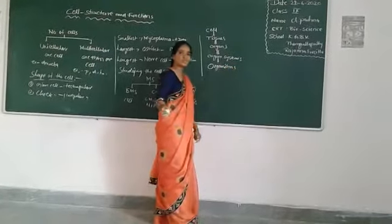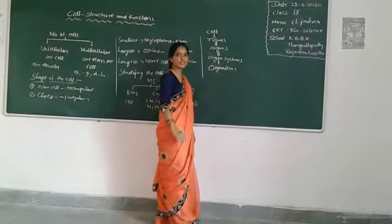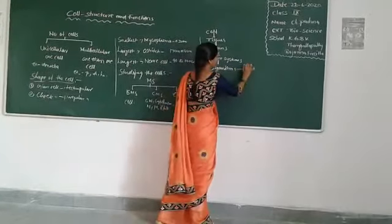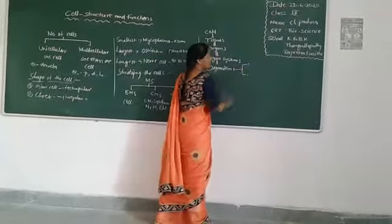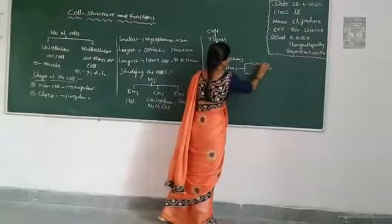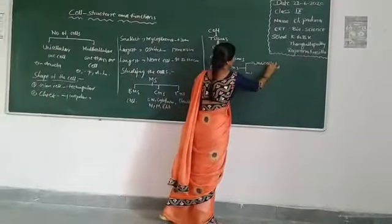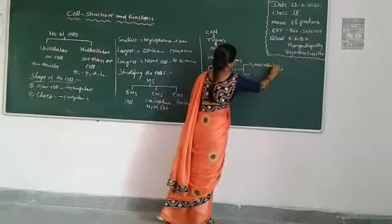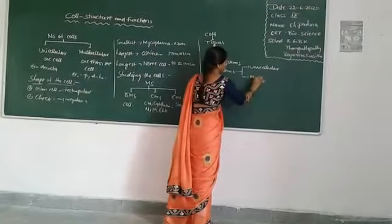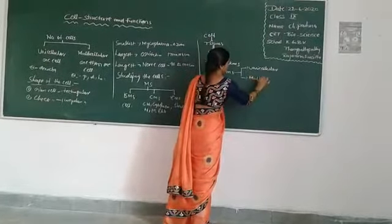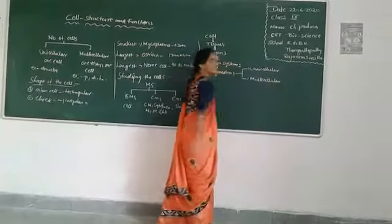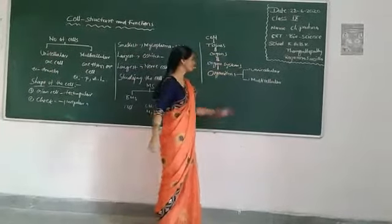There are two types of organisms: unicellular and multicellular organisms.